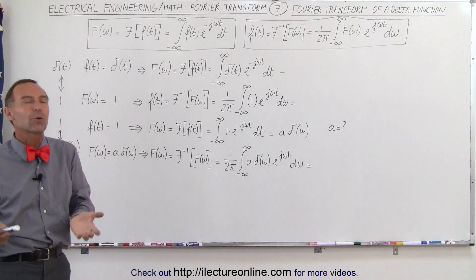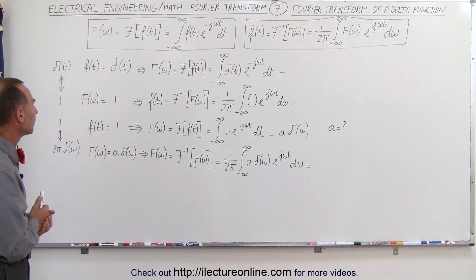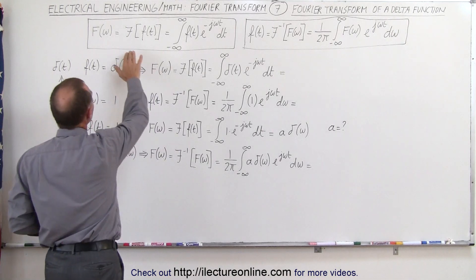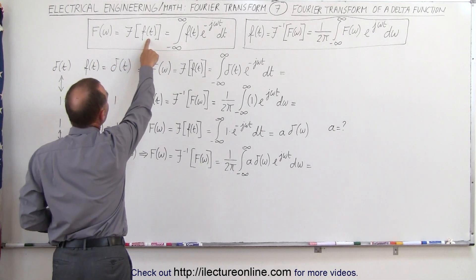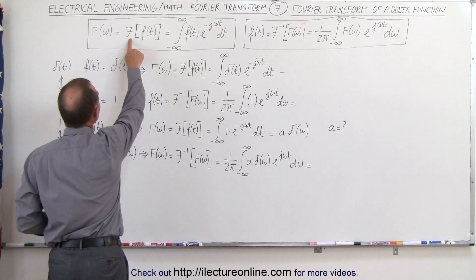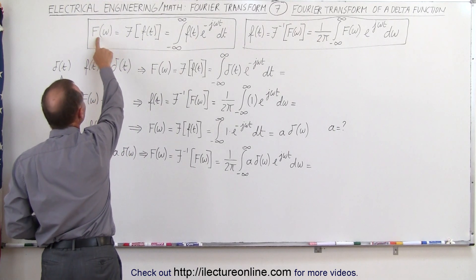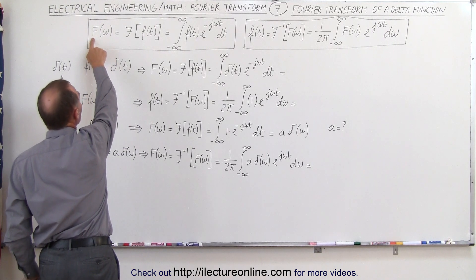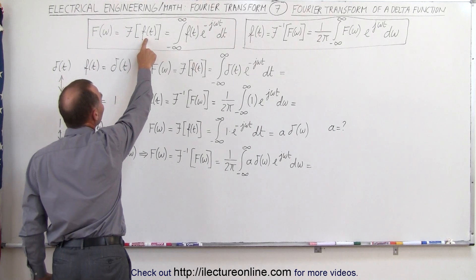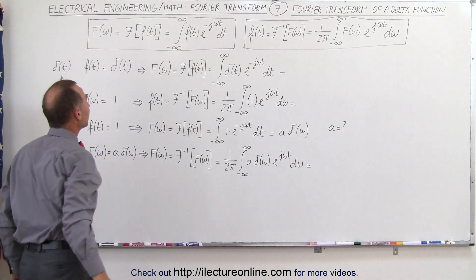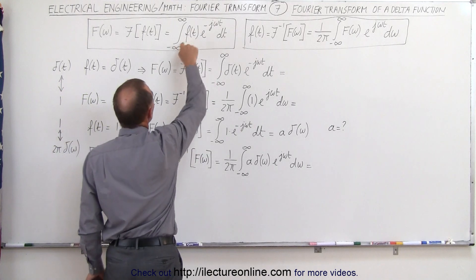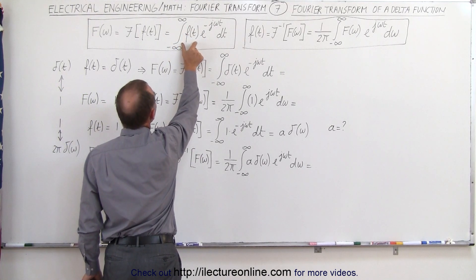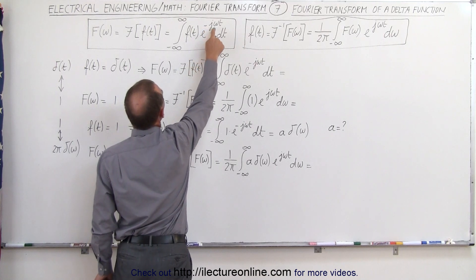The question is how does that work? How do we know that's the case? Well, let's go back to the definition of what a Fourier transform is mathematically. If we have a function in the time domain and we take the Fourier transform of that, we get the equivalent function in the frequency domain. This capital F means it's the Fourier transform of the small f in the time domain. The equation is the integral from minus infinity to infinity of the function in the time domain, times e to the minus j·ω·t dt.